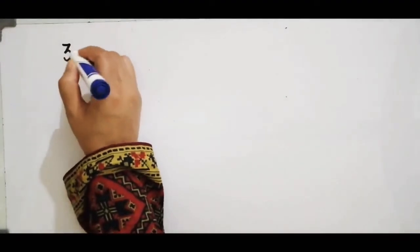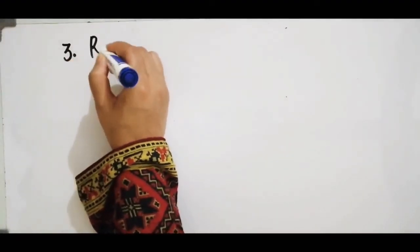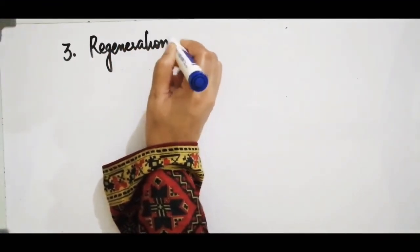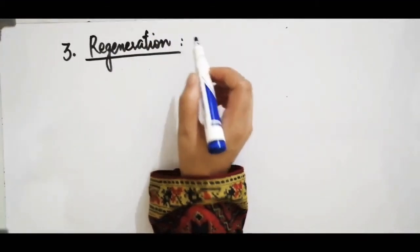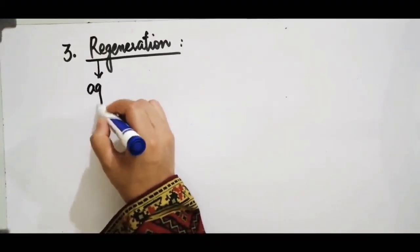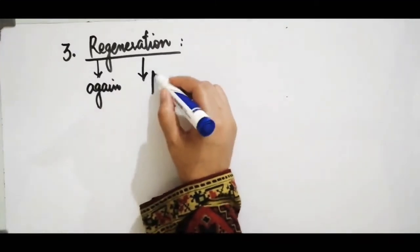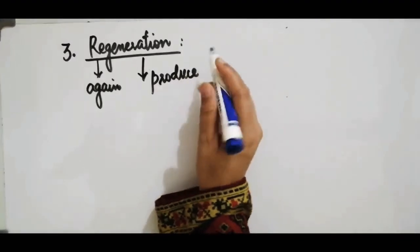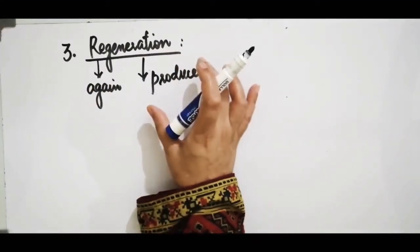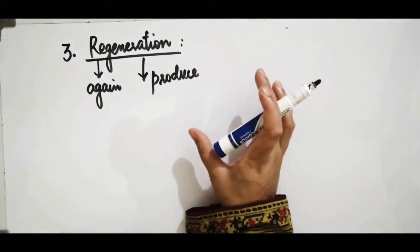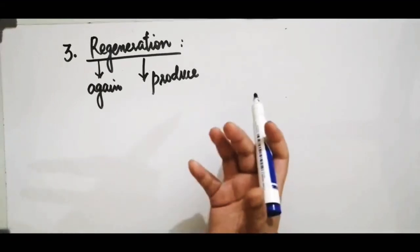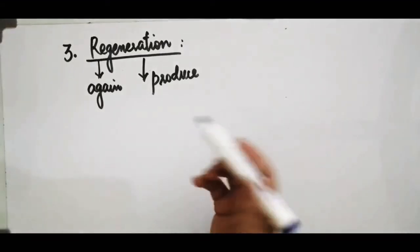The third significance of mitosis is regeneration. 'Re' means again, and 'generation' means to produce or form. So regeneration means to produce something again. Some organisms can regenerate — that is, regrow parts of their bodies — and the production of new cells is achieved through mitosis.